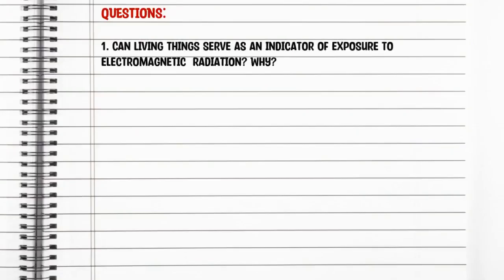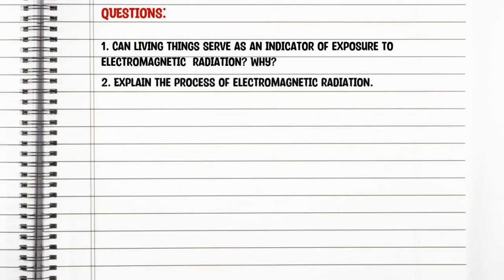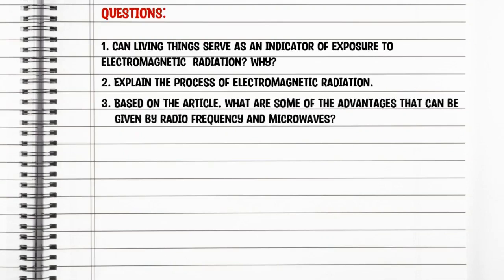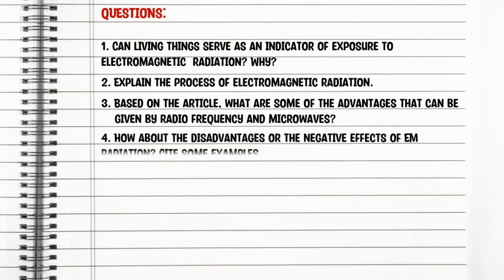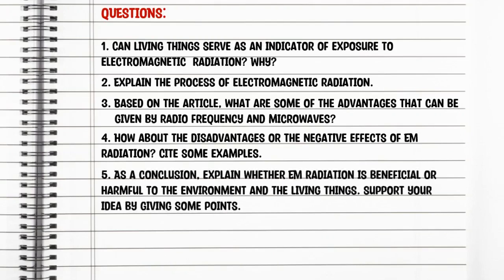Now, let us answer the following questions. First, can living things serve as an indicator of exposure to electromagnetic radiation? Why? Second, explain the process of electromagnetic radiation. Third, based on the article, what are some of the advantages that can be given by radiofrequency and microwaves? Fourth, what are the disadvantages or the negative effects of EM radiation? Cite some examples. And last, as a conclusion, explain whether EM radiation is beneficial or harmful to the environment and living things. Support your idea by giving some points.